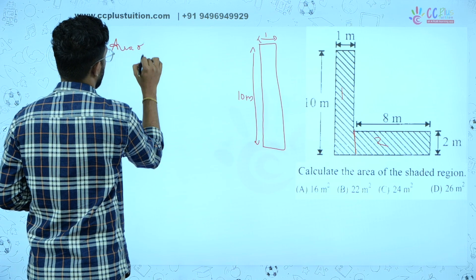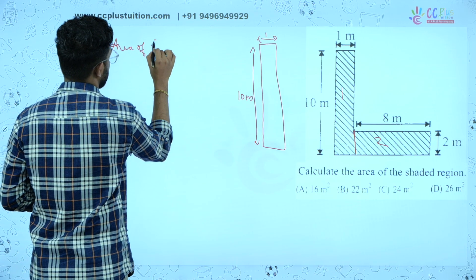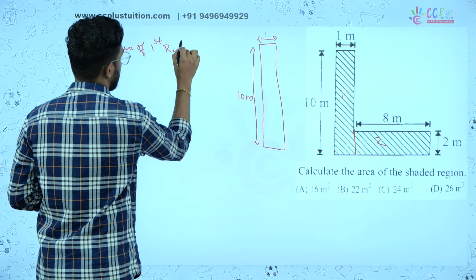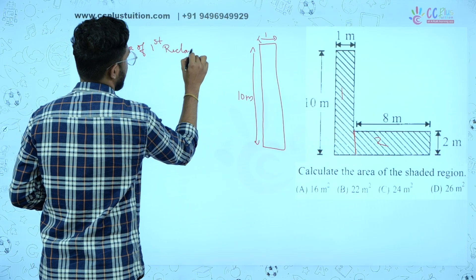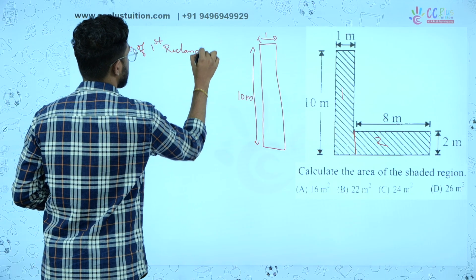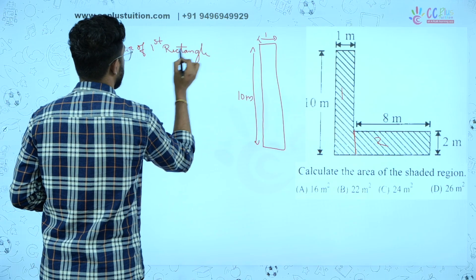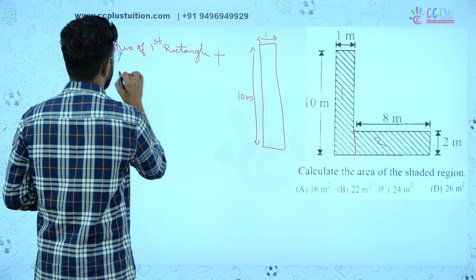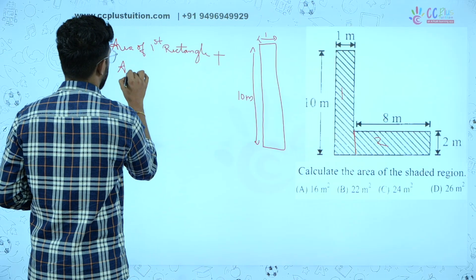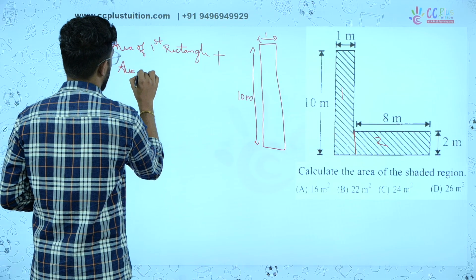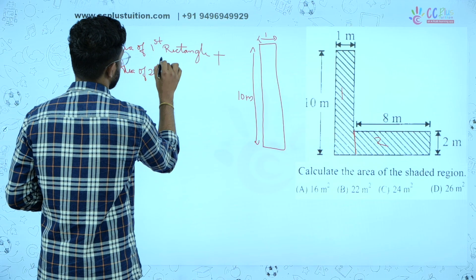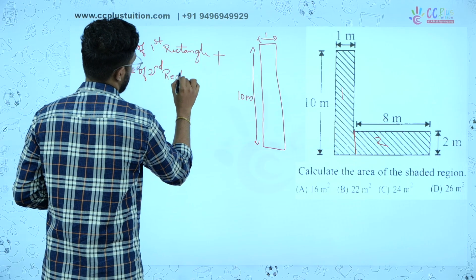Area of first rectangle. Area of second rectangle.